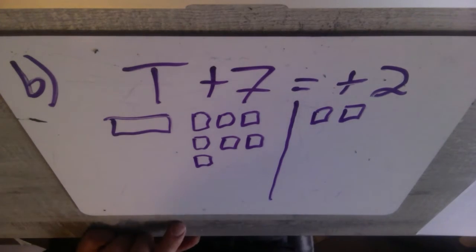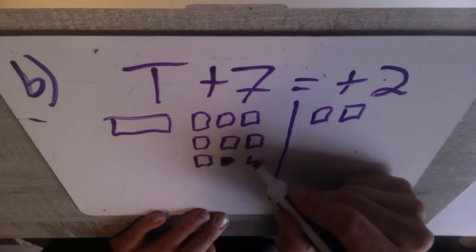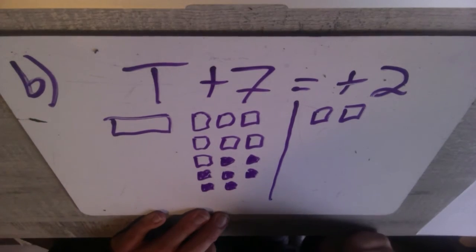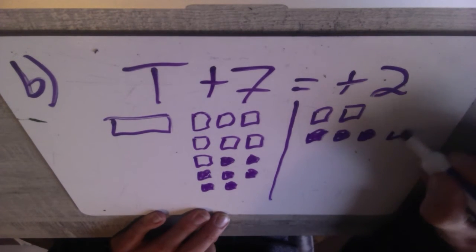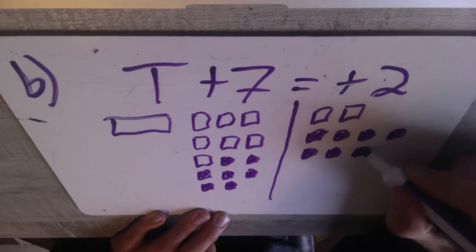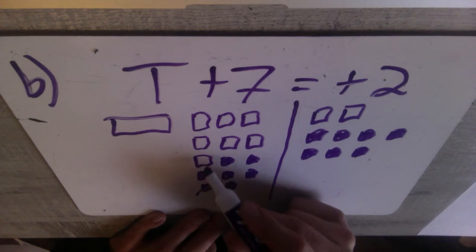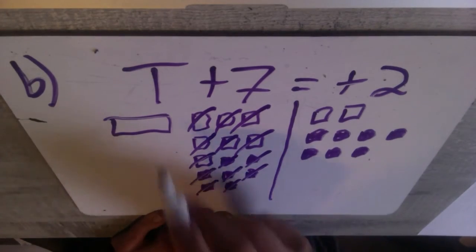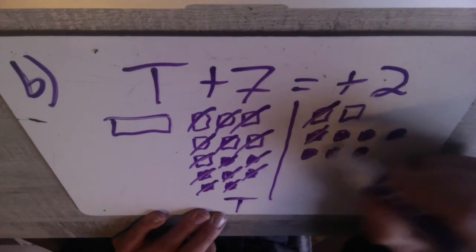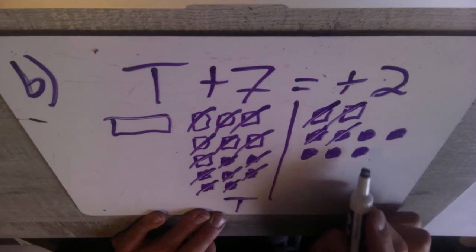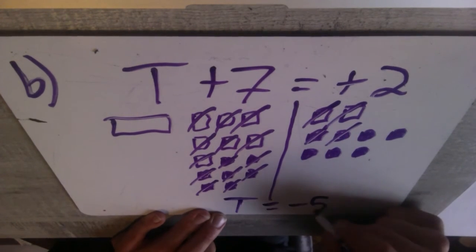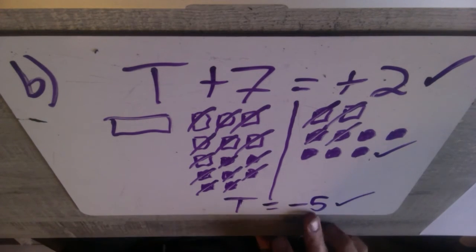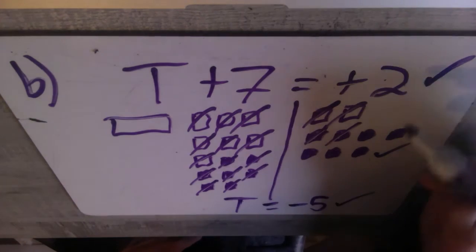Get this variable alone — to get rid of the seven positives, we've got to put in seven negatives on the left side, and we must put in seven negatives on the right side too. Now we can start cancelling out. That gets rid of all of them on the left side, and all we have left is our variable T. On the right side after cancelling, what we have left is one, two, three, four, five negatives. So T equals negative five. Check the answer: negative five plus positive seven gives you positive two.